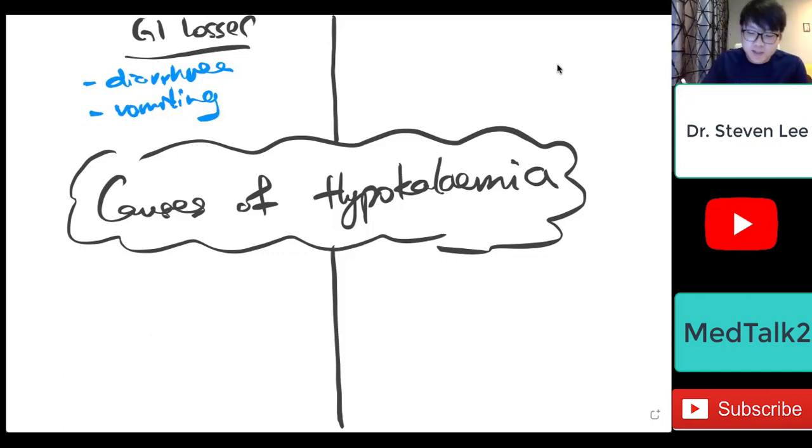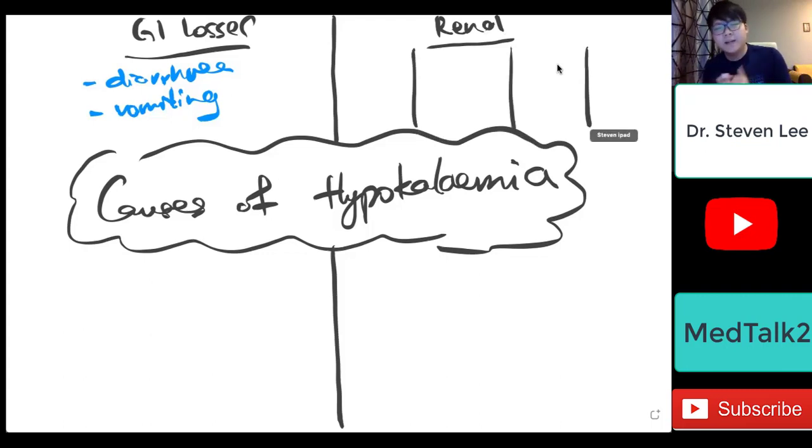Of course, if the patient is not having diarrhea or vomiting, then could it be renal losses? That means the potassium is actually being lost through the renal channel. So here I would like to sub-branch into four categories. Number one, check the drug list. I always think that we should check the drug list.